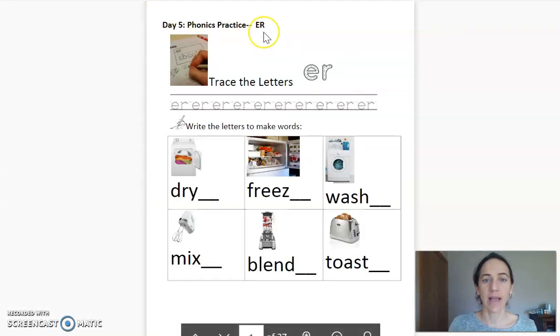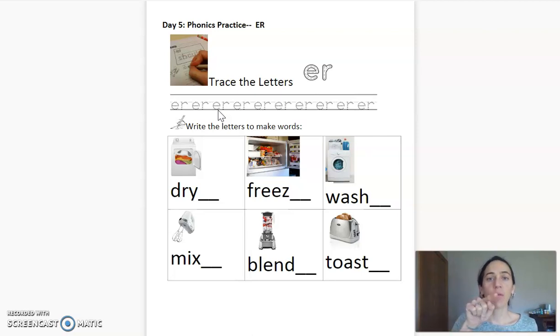First, we're going to talk about the letters ER when they make the sound ER. On your papers, I want you to trace the letters again and again to practice. If you don't have your paper, put your finger in the air and we'll write it together. E, R. Now you can trace it on your hand. E, R, ER.